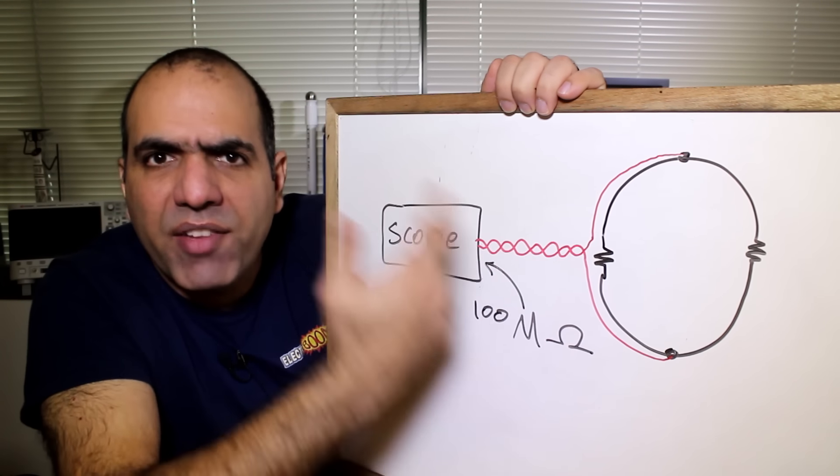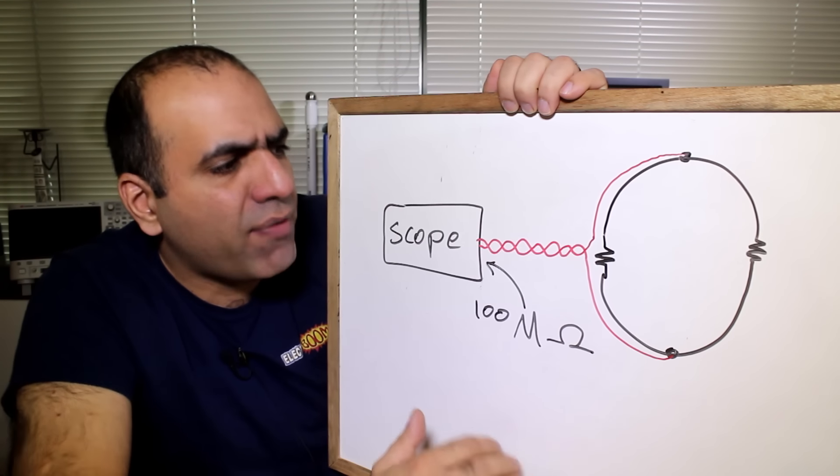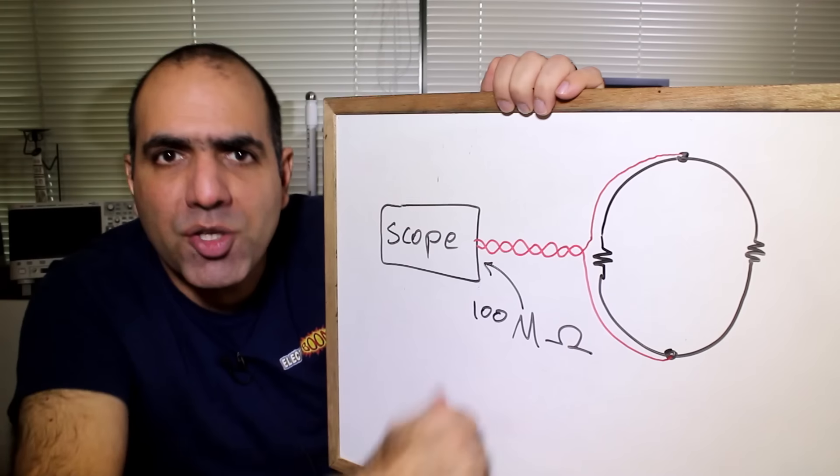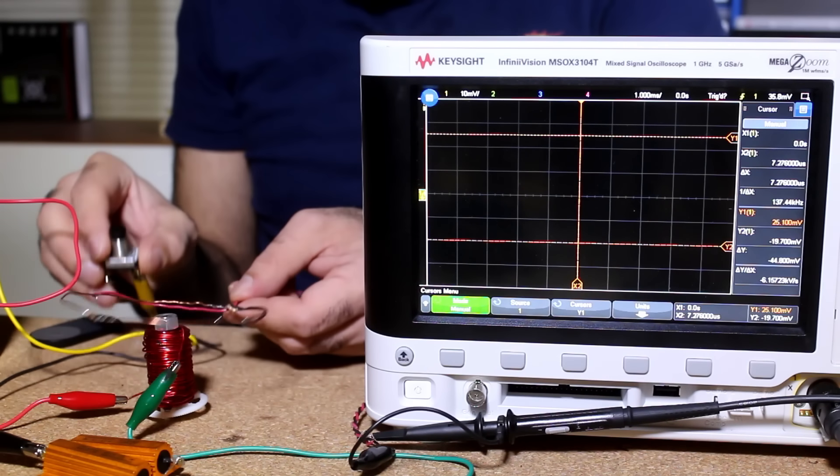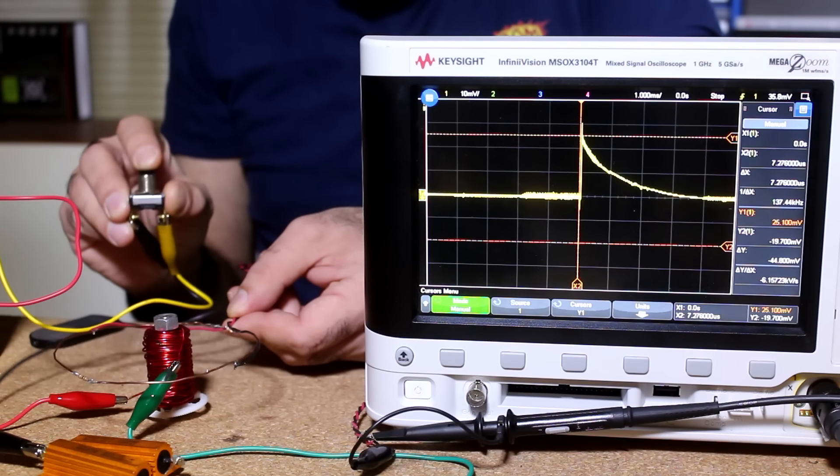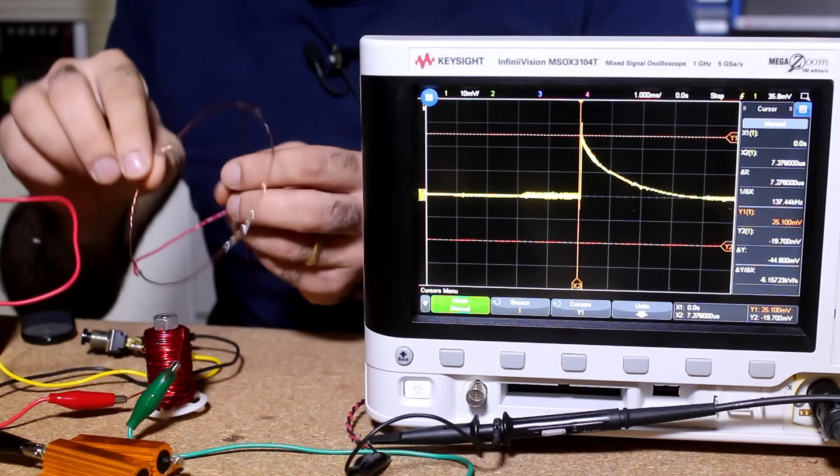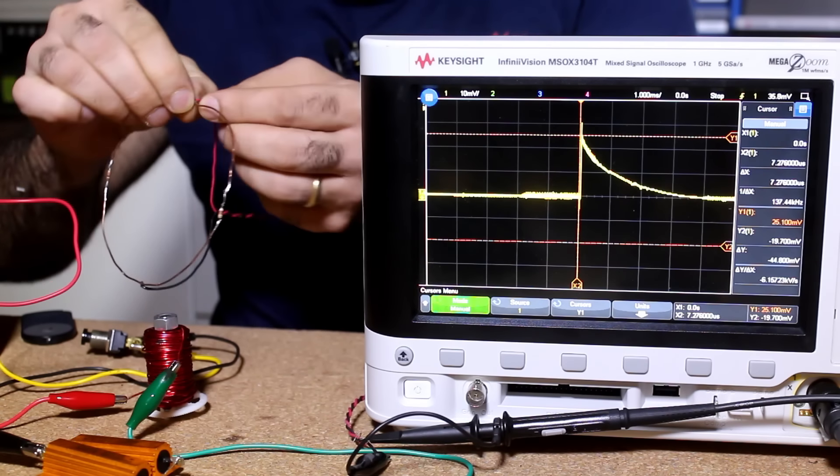Connecting the scope doesn't affect the main loop behavior at all because it has a hundred mega ohm input impedance. So we can safely say there is no loading effect from connecting the scope to the loop where we measure. Now the sense wires are on the 10 kilo ohm side. Ready? Click. See? I have a voltage pulse with a peak of around 25 millivolts. Now all I do is I flip the sense wires to the 1 kilo ohm side of the loop. Ready?